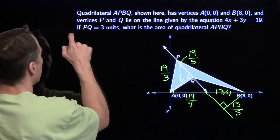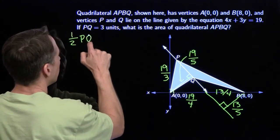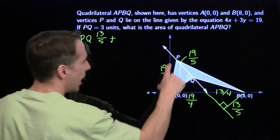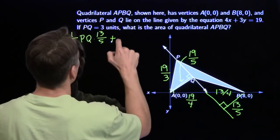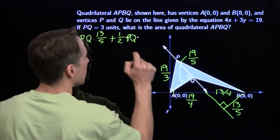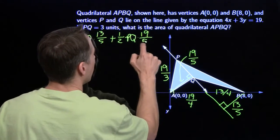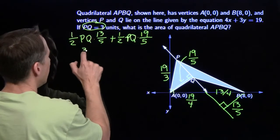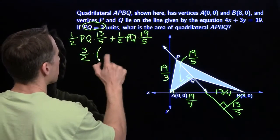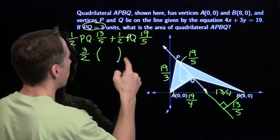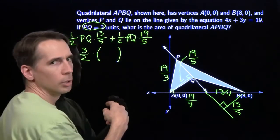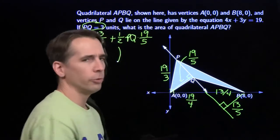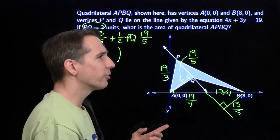Now I can solve the problem. I'm going to take the area of this triangle: one half times PQ times 13 fifths, and add the area of the other triangle: one half times PQ times 19 fifths. I can factor out PQ, which is 3. I get 3 halves times 13 fifths plus 19 fifths, giving me 32 fifths. Wait — this whole segment was 32 quarters. There's a faster way to do this.